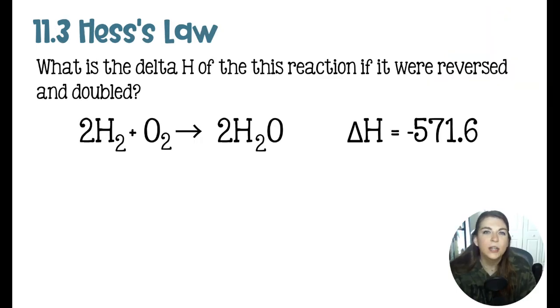Here we have a very simple Hess's Law question. I believe that most high school first-year chemistry students are really just doing these manipulations. For the purposes of a first-year chem class, I think this question here will be just fine. And that is, what is the delta H of this reaction if it were reversed and doubled?